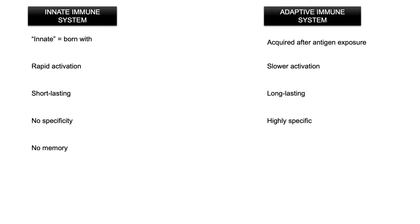Memory cells are produced alongside effector cells in the adaptive immune system. Through this, memory cells are reactivated quickly upon reinfection with a specific pathogen, allowing the adaptive immune system to remember a specific pathogen years after first encountering it. This immunological memory is the entire basis of vaccinations — actually very relevant to our current situation with COVID-19.